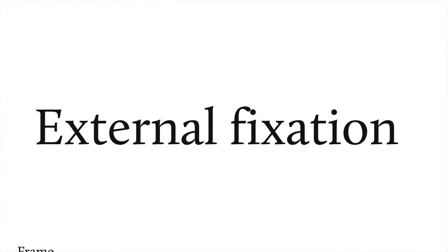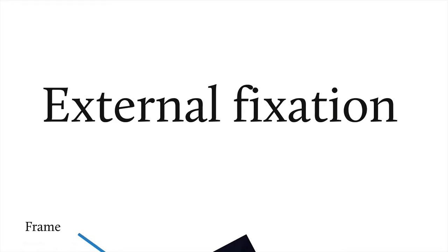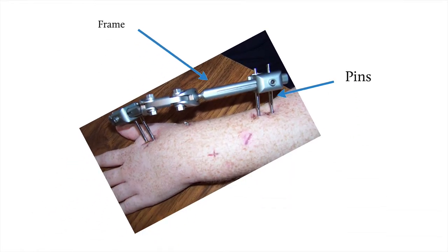External fixation, or ex-fix: pins are inserted percutaneously to hold the fracture in place, then attached to a fixator or frame. External fixation may be used in open fractures, if there is extensive soft tissue injury, if the bone requires lengthening, or if there are concerns regarding infection with internal fixation.